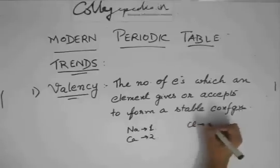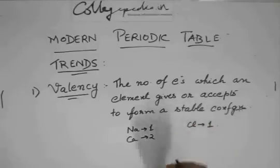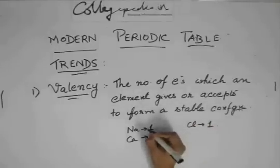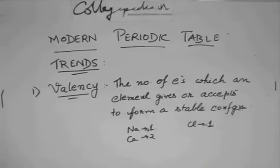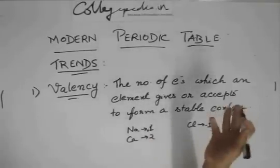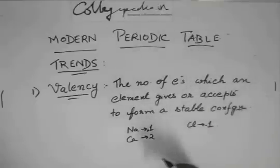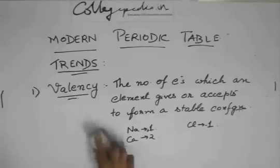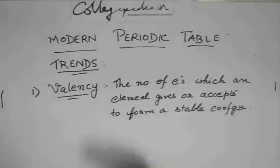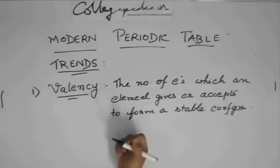And then again, for chlorine, it is one. But we can just for the sake, we can call this as plus one, we can call this as minus one. Because sodium gives an electron and chlorine accepts an electron. So basically, the valency, if you want to write it as a formula,